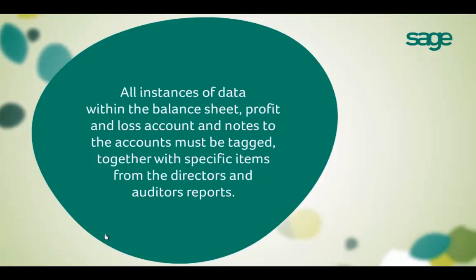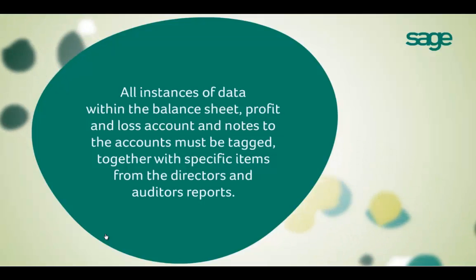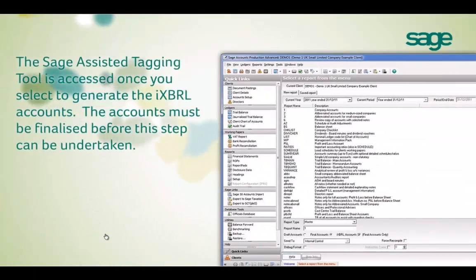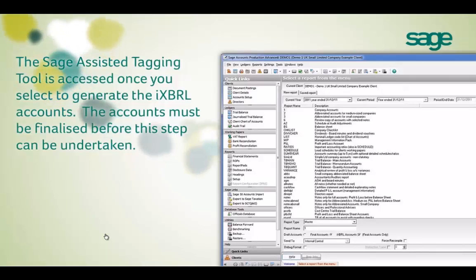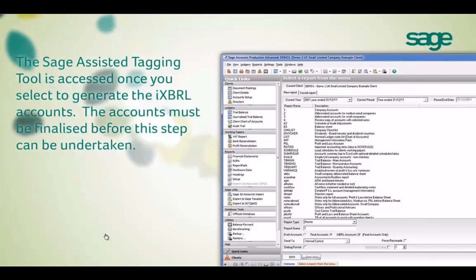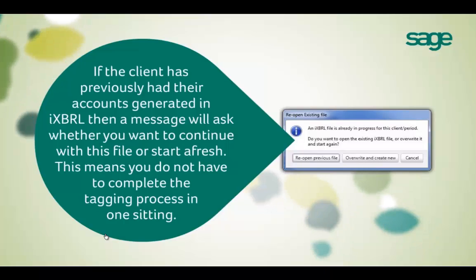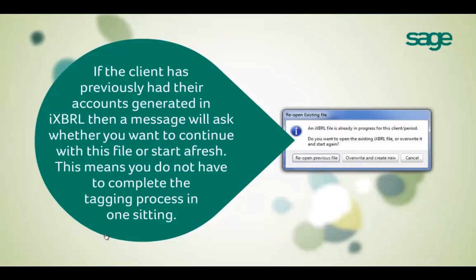Full IXBRL information in the financial statements must now be tagged in the background of the P&L, balance sheet and notes, along with specific areas from the Directors', Auditors' or Accountants' report. After you have finalised the accounts with a client, you will generate the IXBRL file using our Assisted Tagging tool. There may be cases where you hardly need to tag anything manually at all, as we have added a lot of tags automatically.